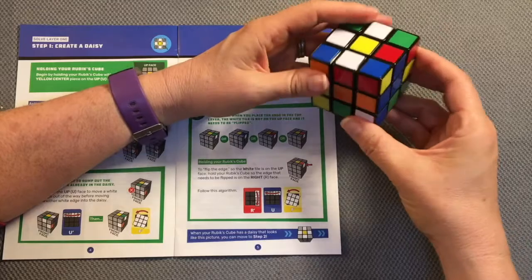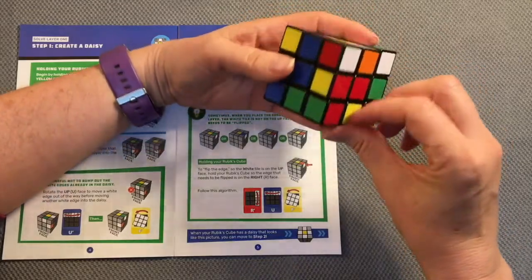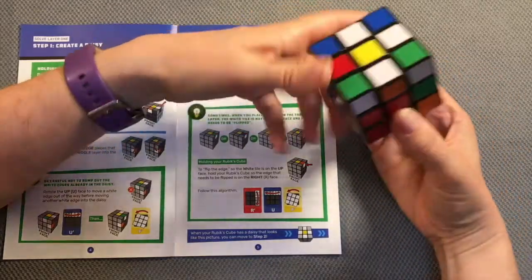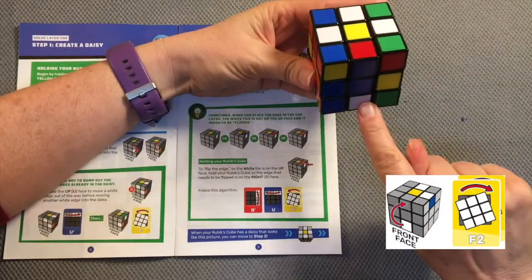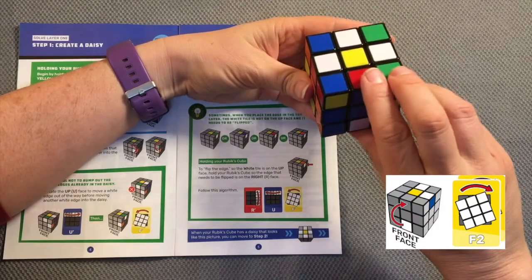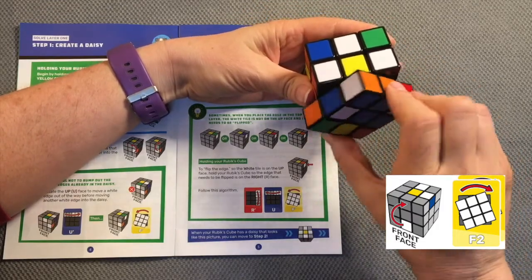We have one more tile that needs to be moved and there it is on the bottom face. I need to rotate it around so it's just below where it needs to go. I simply need to do front face to the right once, to the right twice.